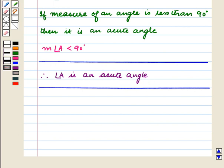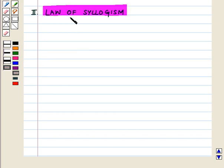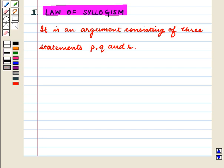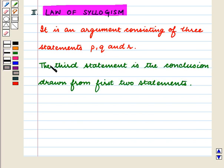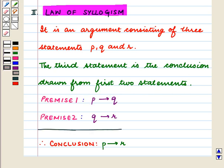Now let us discuss the law of syllogism. It is an argument consisting of three statements P, Q, and R. The third statement is the conclusion drawn from the first two statements. It is represented in the following way.